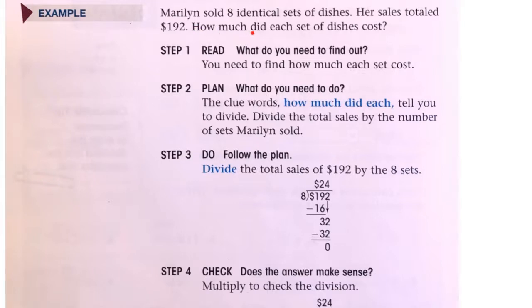Step one: read it. We read it. What do we need to find out? We need to find out how much each set cost. Step two: make a plan about what we need to do. The clue words 'how much did each' tell us to divide. Divide the total sales by the number of sets Marilyn sold.